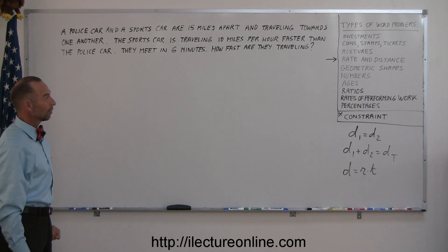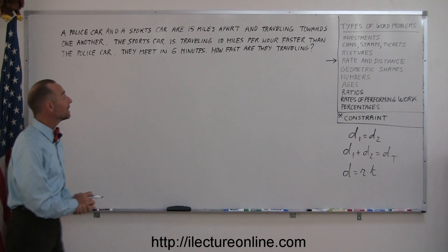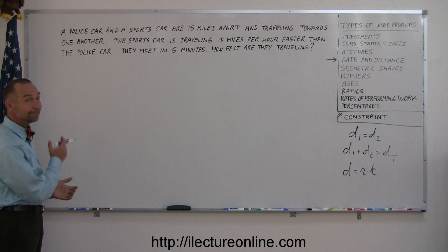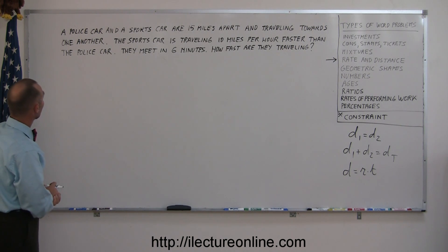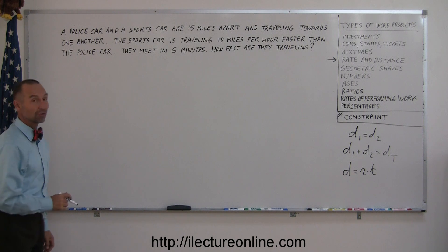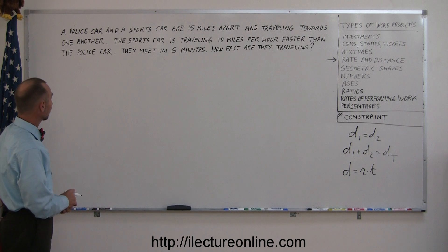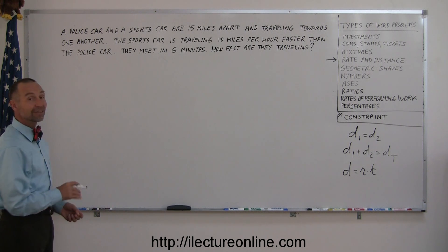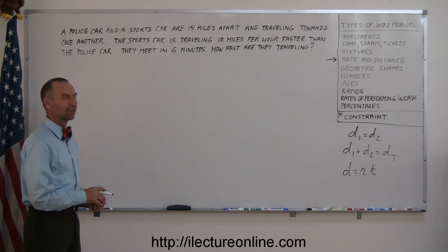All right, here is another example of how we deal with rate and distance problems. Let's read it, get a feel for it. A police car and a sports car are 15 miles apart and traveling towards each other. The sports car is traveling 10 miles per hour faster than the police car, and they meet in six minutes. How fast are they traveling?